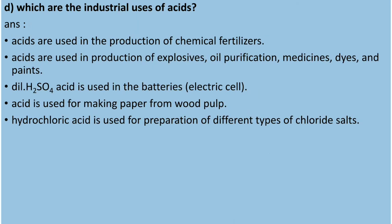Question five (d): what are the industrial uses of acid? Acids are used in the production of chemical fertilizers, explosives, oil purification, medicine, dyes, and paints. Dilute H2SO4 is used in batteries. Acid is used for making paper from wood pulp. Hydrochloric acid is used for the preparation of different types of chloride salts.